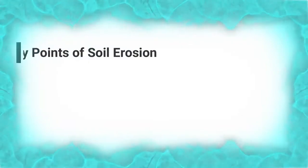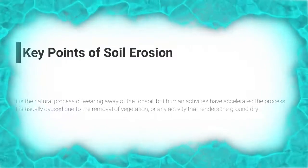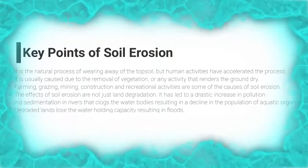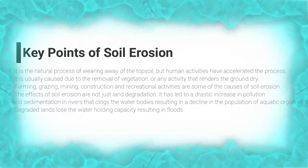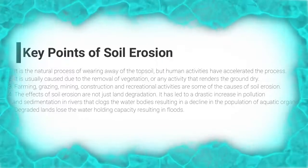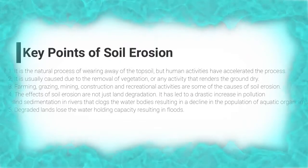Key points of soil erosion: It is the natural process of wearing away of the topsoil, but human activities have accelerated the process. It is usually caused due to the removal of vegetation or any activity that renders the ground dry. Farming, grazing, mining, construction, and recreational activities are some of the causes of soil erosion.